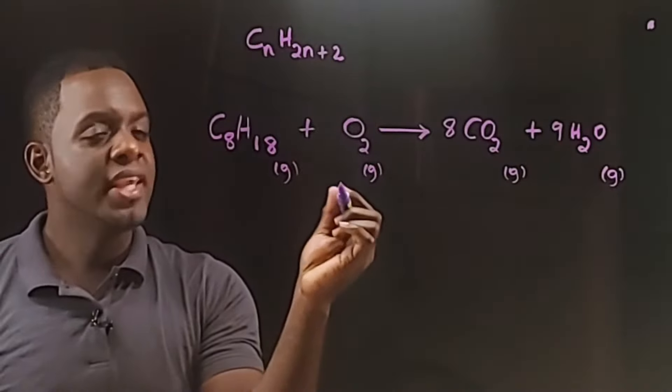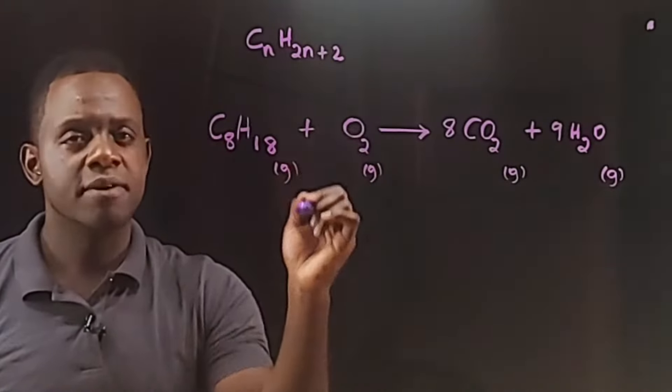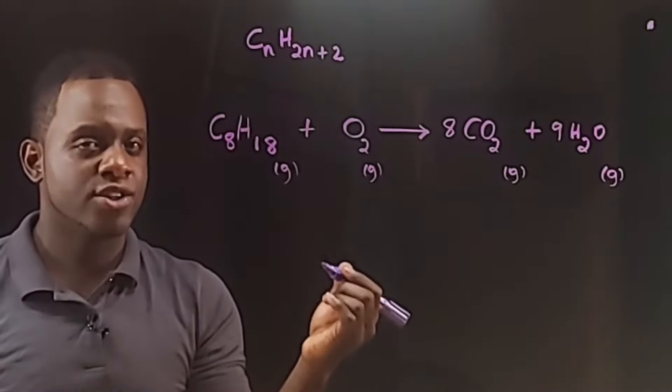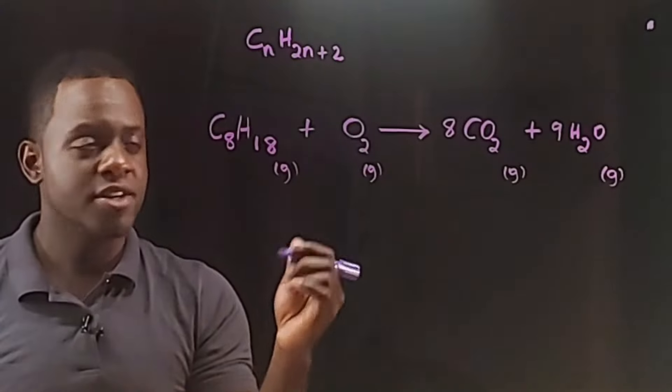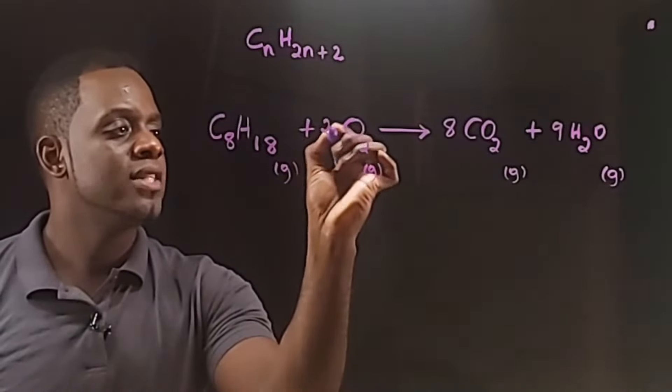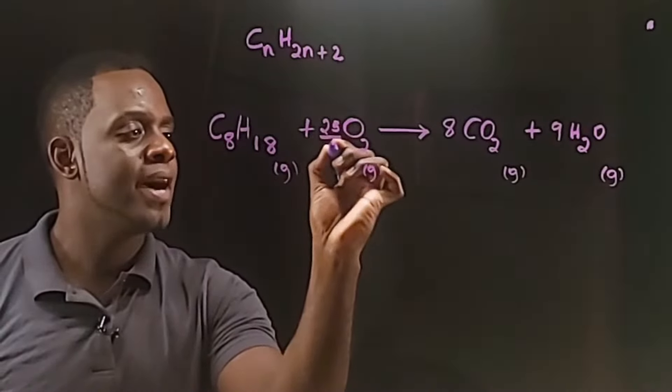So we can put 12 and a half, but we don't normally write fractions. However, we break the rule now and write a fraction, and that is 25 divided by 2.